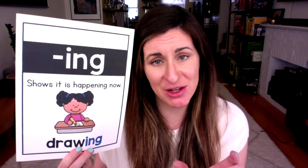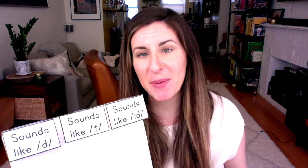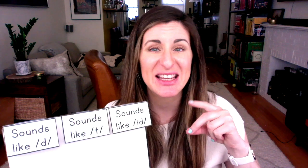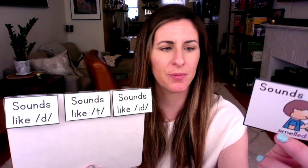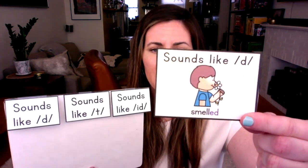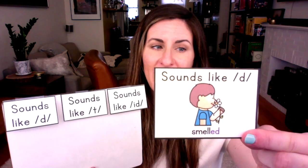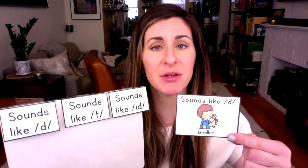We have to add those endings to words to show when the thing happened. Now, I also want to point out that when we use that suffix E-D, it actually sounds different depending on the word it's going on the end of. Sometimes E-D sounds like D. For example, this one says 'smelled.' Try saying that — smelled. Do you hear how it sounds like D at the end? I smelled the flower.